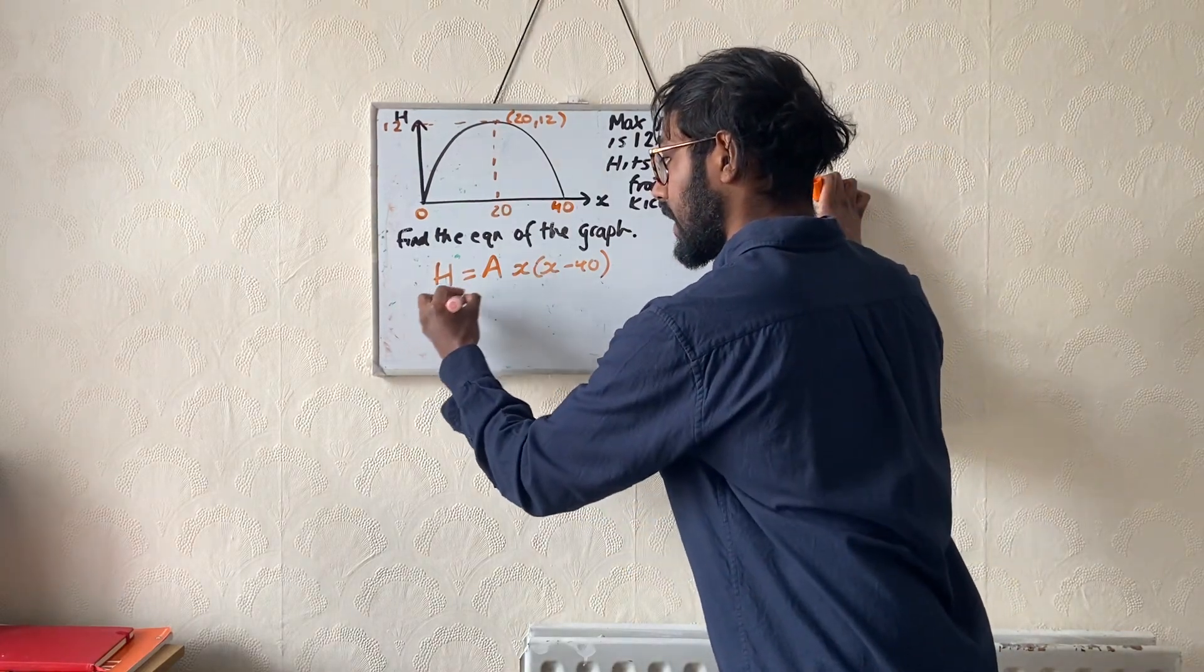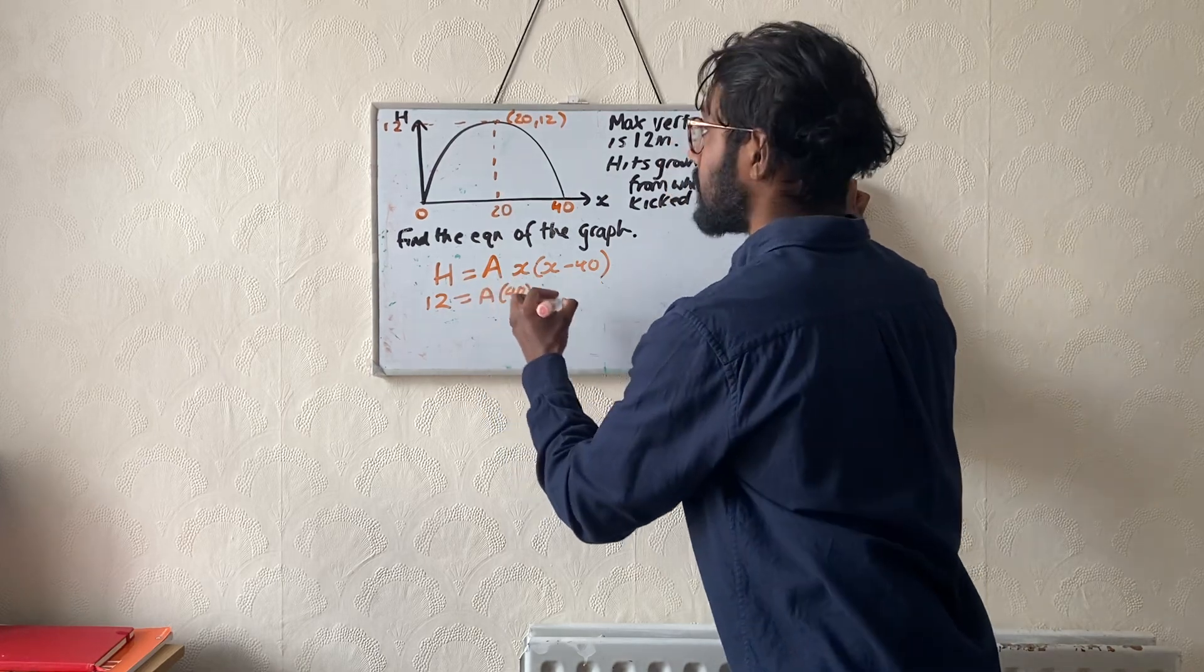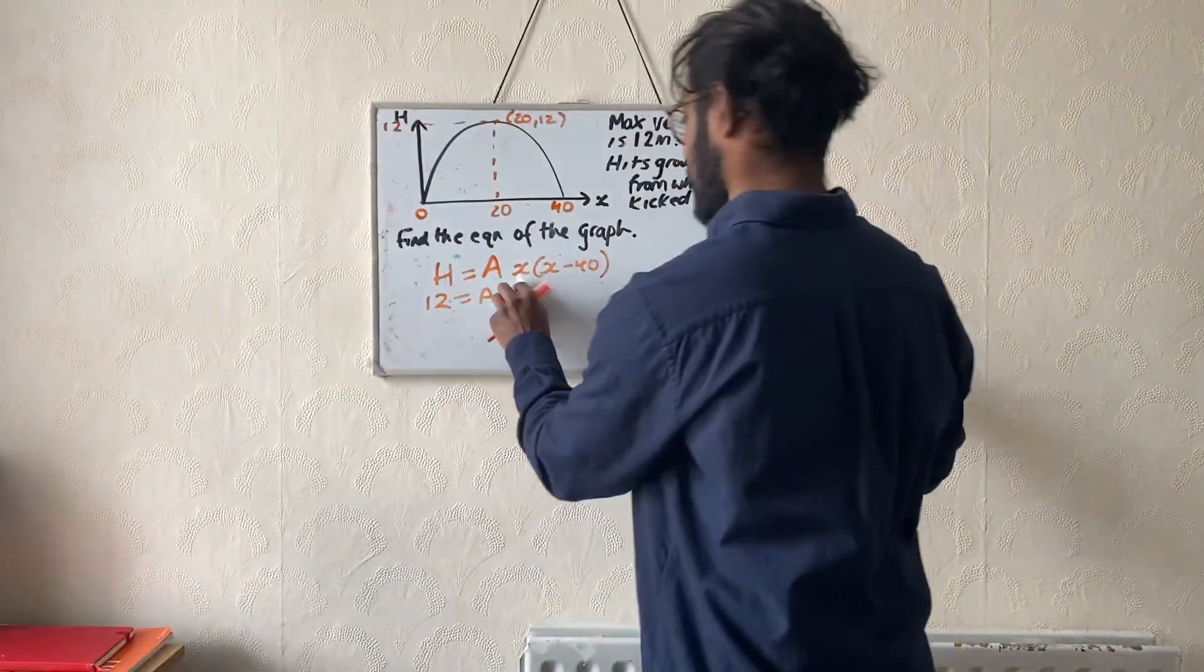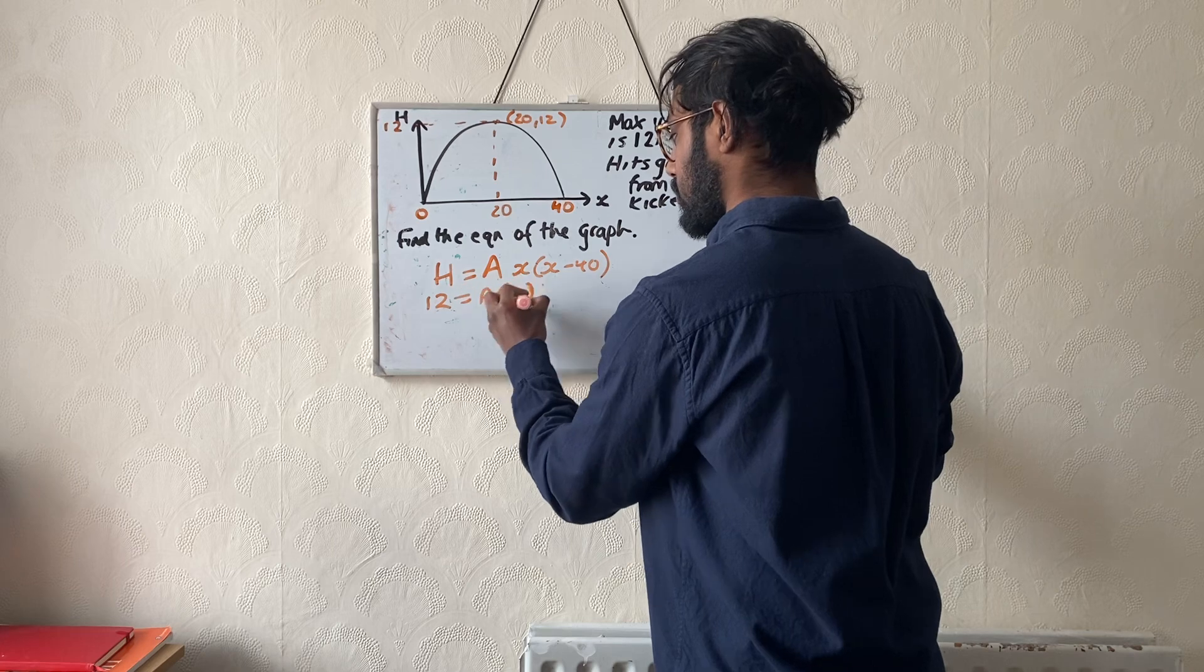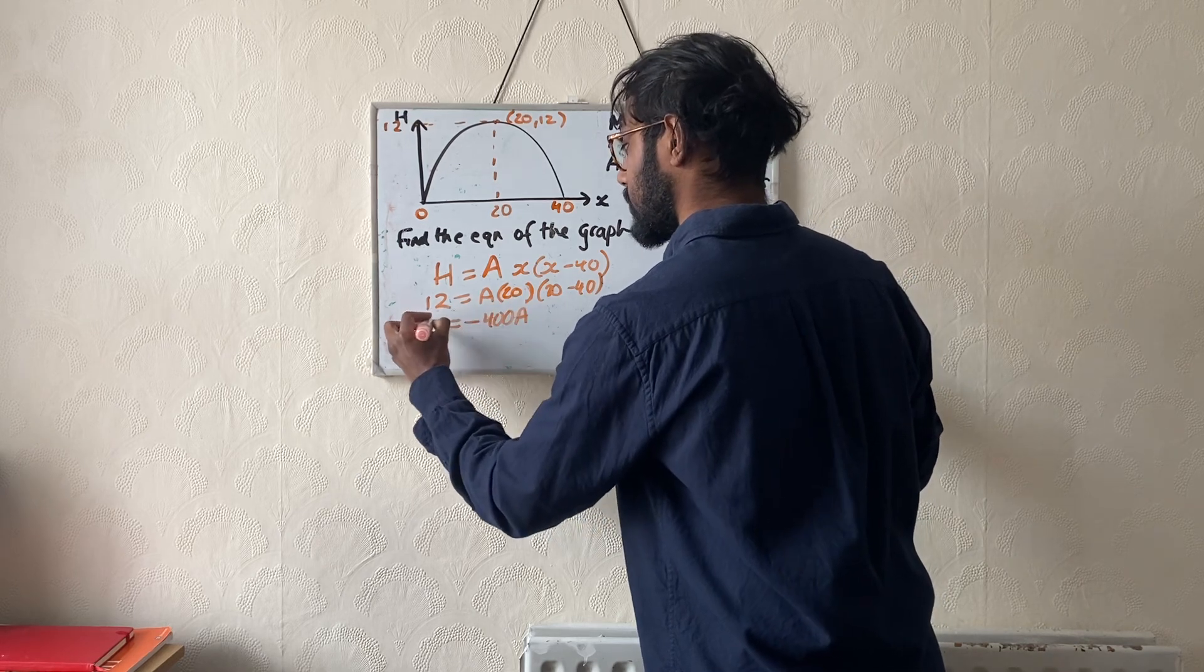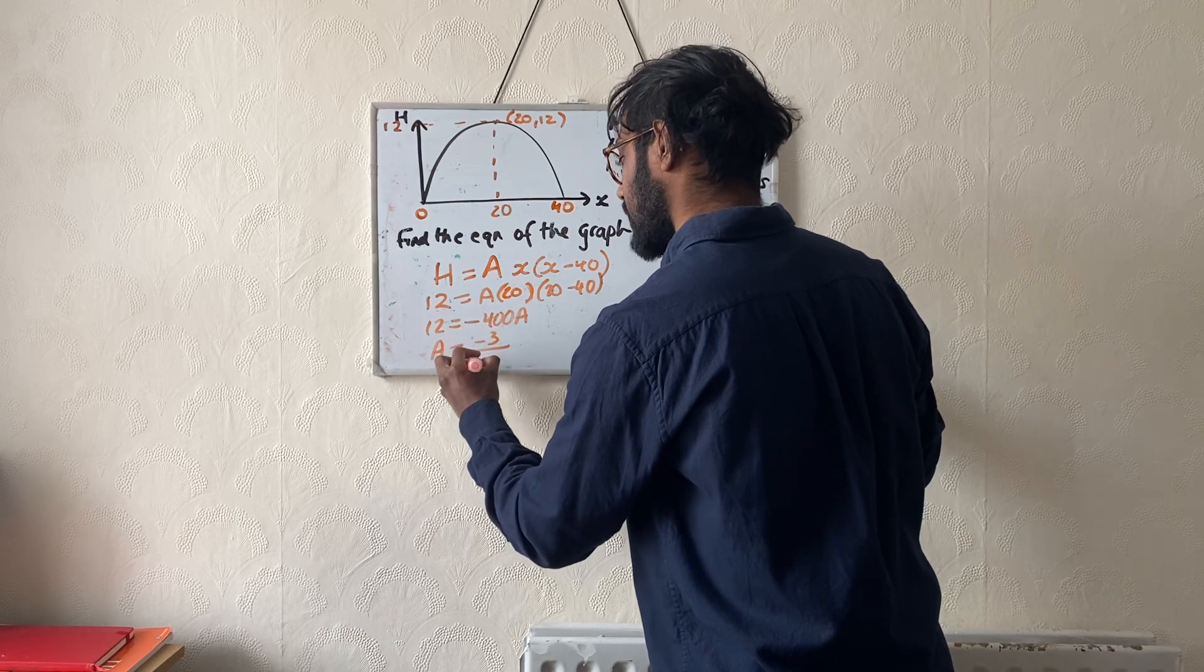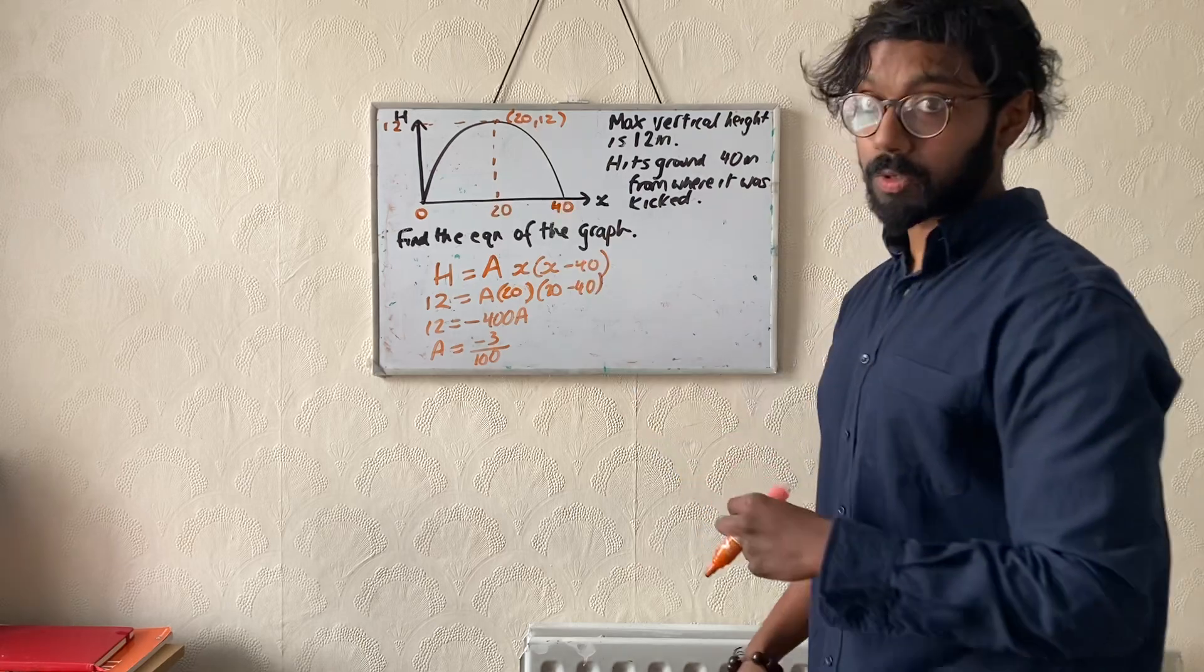So 12 is equal to a multiplied by 20 brackets 20 take away 40, and that gives me minus 400a equals 12, and that gives me a equals minus 3 over 100. I did expect a negative number because you can see by the shape it should be a negative number.